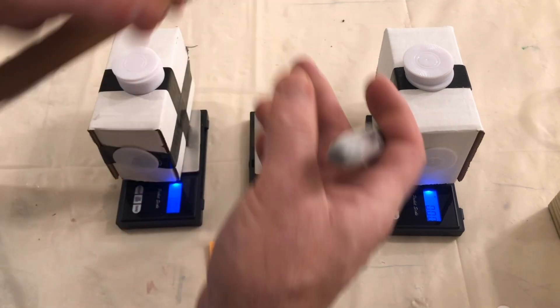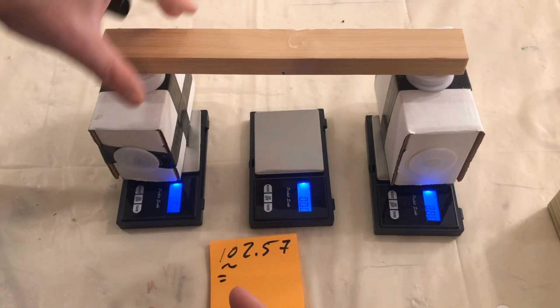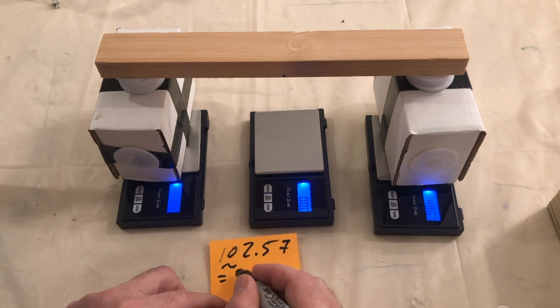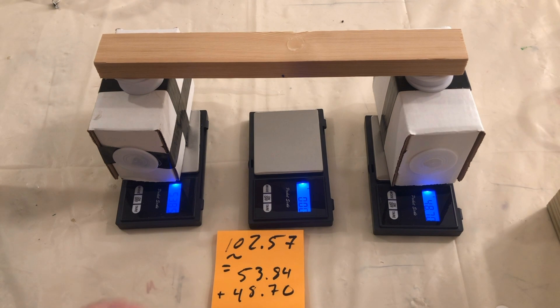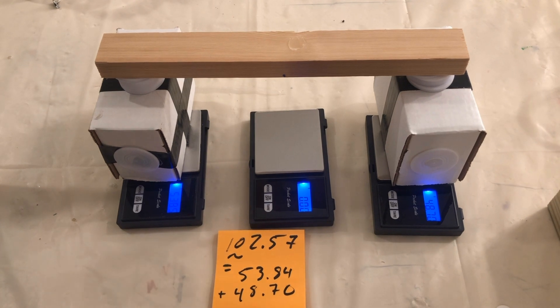We'll now see what two scales register when we distribute its weight across both of them. Notice that the left scale's reading added to the right scale's reading approximately equals the single scale reading. The downward force from its entire weight is now being distributed across both scales.